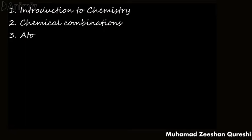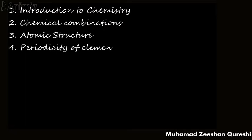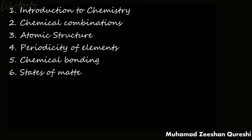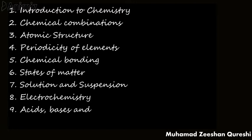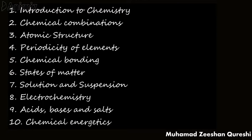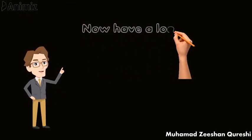The first chapter is Introduction to Chemistry. The second is Chemical Combinations. Chapter 3 covers Atomic Structure. Chapter 4 is Periodicity of Elements. Chapter 5 is Chemical Bonding. Chapter 6 is States of Matter. Chapter 7 is Solution and Suspension. Chapter 8 is Electrochemistry. Chapter 9 is Acids, Bases and Salts. Chapter 10 is Chemical Energetics.